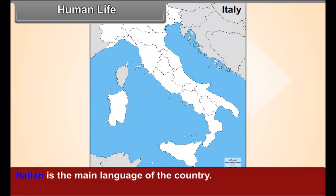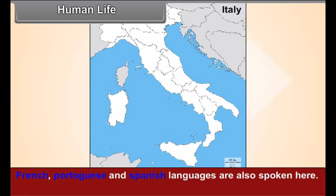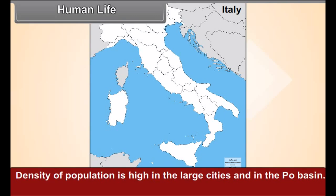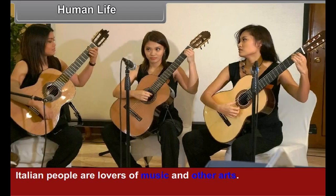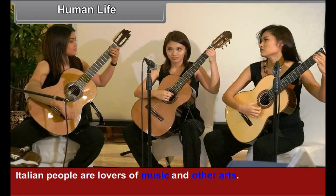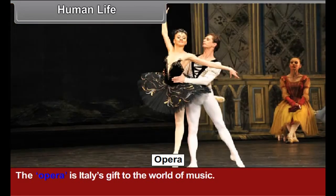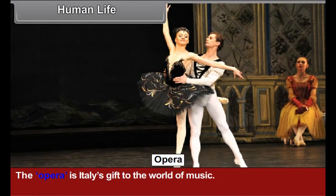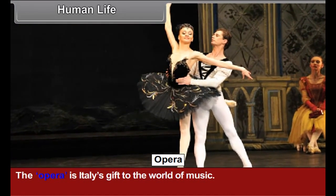Human life: Italian is the main language of the country. French, Portuguese, and Spanish languages are also spoken here. Density of population is high in the large cities and in the Po Basin. Italian people are lovers of music and other arts. The opera is Italy's gift to the world of music.